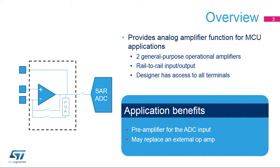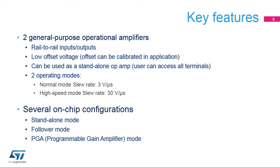it is possible to use them as a voltage follower, non-inverting and inverting amplifiers, as well as analog filters such as low- or high-pass filters. They can also act as a pre-amplifier for the ADC input. The operational amplifier inside STM32H7 products offers general-purpose, rail-to-rail inputs and outputs.